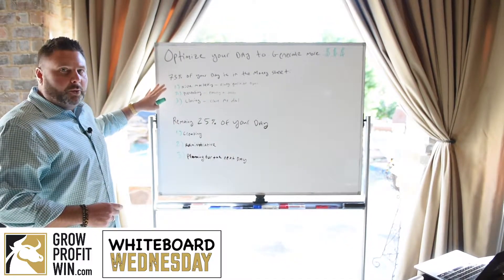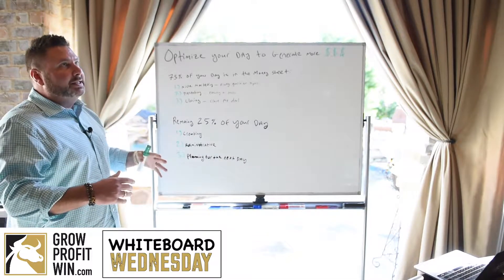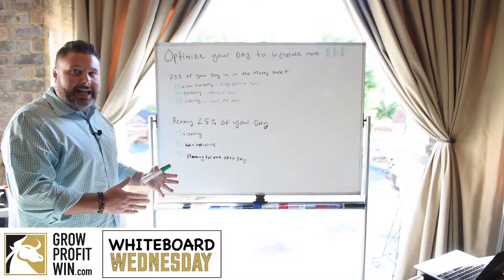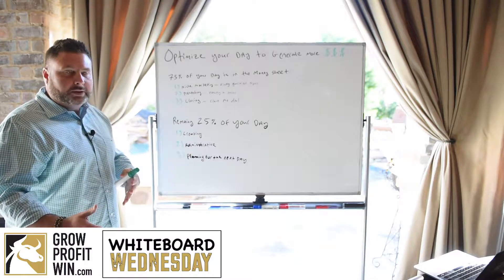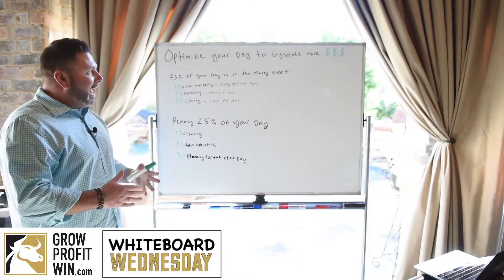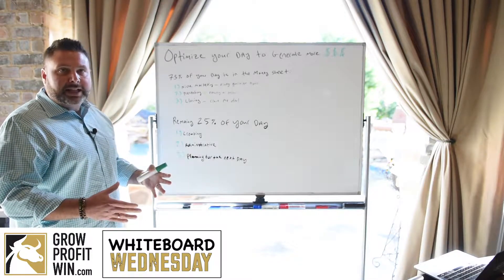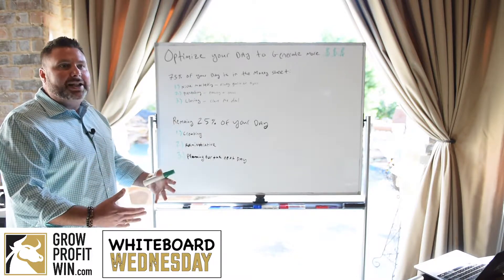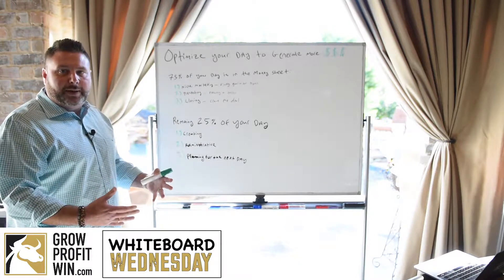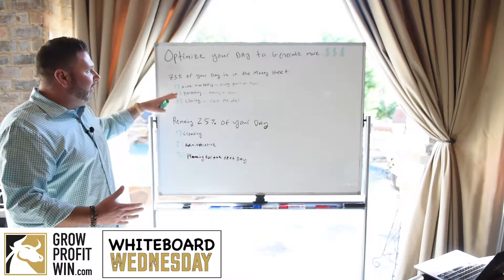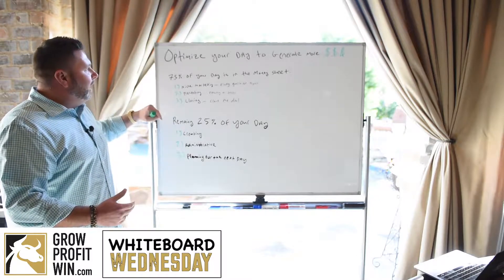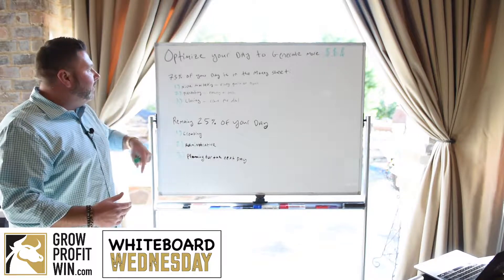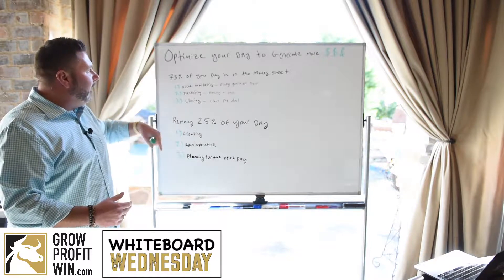I talk all the time about the money sheet, but what I realized is the money sheet covers the six to eight top priorities you need to do that day to generate more revenue. What I haven't dove deep into is the actual activities you should be doing within that money sheet. I'll put the money sheet for free in the comment section.